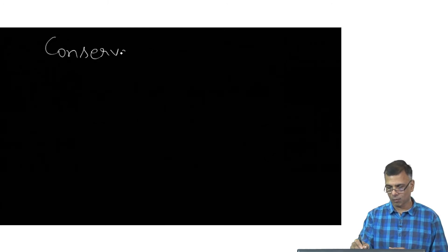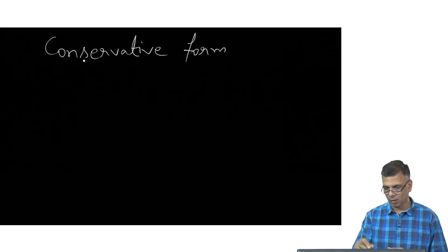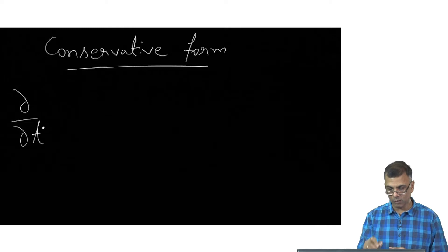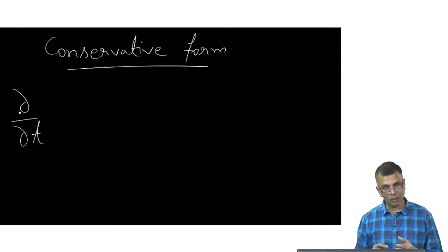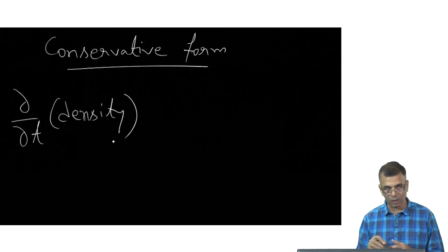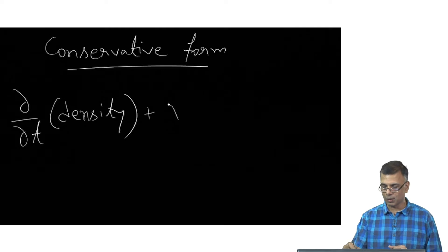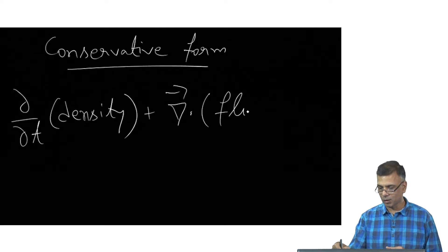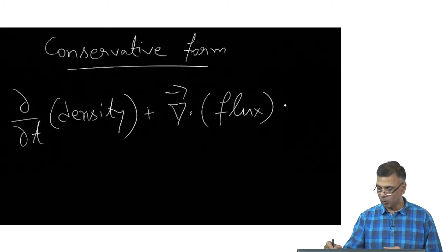What we will do today is try to write down an energy equation in the conservative form just like we have written down the other equations in conservative form, mass conservation, momentum conservation and so on. So before that, just to recap, the conservative form of writing down any conservation equation is partial time derivative of the density of whatever quantity you are talking about, if you are talking about mass conservation is mass density, plus divergence of the flux of this quantity is equal to zero.